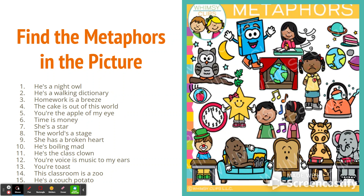'He is a night owl' — that's something you use to talk about somebody who stays up late at night and gets more work done in the nighttime than in the morning. Then we have 'he's a walking dictionary,' which talks about somebody who has a large vocabulary, who knows a lot of words and what they mean. They're obviously not a walking dictionary, but they know a lot of words like a dictionary does.